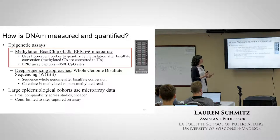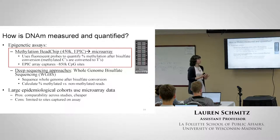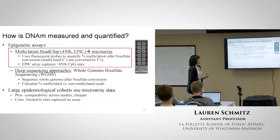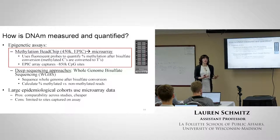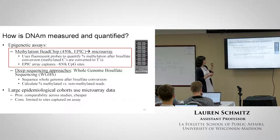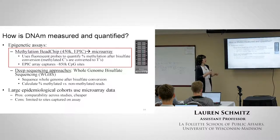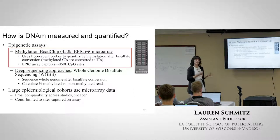Another type of epigenetic assay for looking at DNA methylation is deep sequencing approaches: whole genome bisulfate sequencing and reduced representation bisulfate sequencing. Here, instead of just sequencing the genome as-is, you're sequencing it after bisulfate conversion. This enables you to calculate the percent of methylated versus non-methylated reads from sequencing.